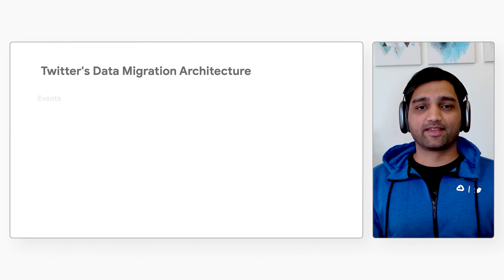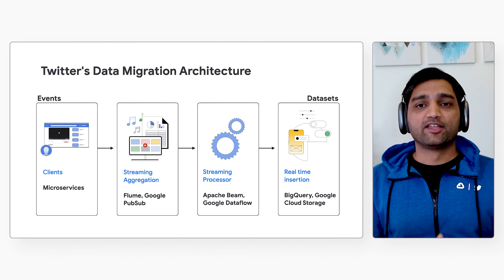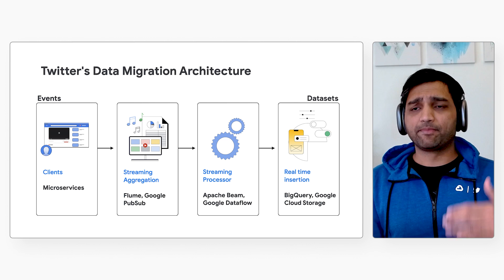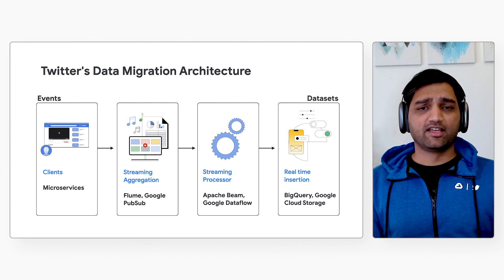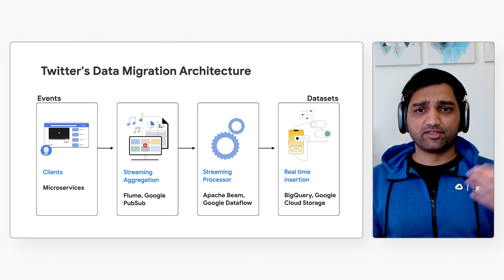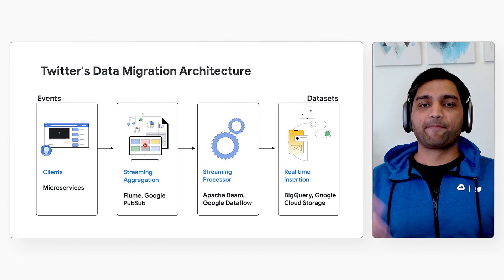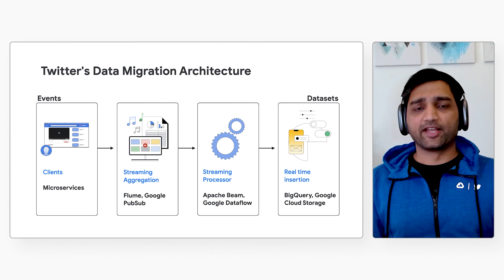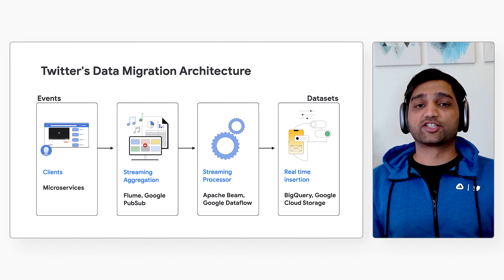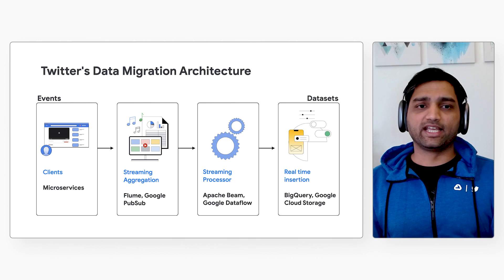Twitter replicates this data in two different ways: batch replication and streaming replication. For batch replication, there's a collection of tools and services to replicate data from HDFS — ranging from individual jobs to a platform-scale self-service solution — ingesting data from HDFS to Google Cloud Storage, and then from Google Cloud Storage to BigQuery. On the streaming replication side, there is a service called Sparrow that uses Kafka, Google Pub/Sub, and BigQuery streaming to load data into BigQuery.